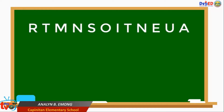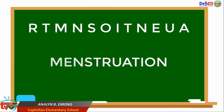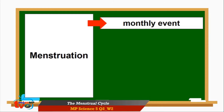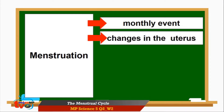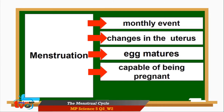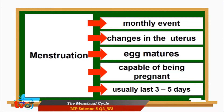Let's have another game. Arrange the scrambled letters to form a word. The word is menstruation. If you hear the word menstruation, what comes to your mind? Monthly event. Changes in the uterus. Egg matures. Capable of being pregnant. Usually lasts for 3 to 5 days.